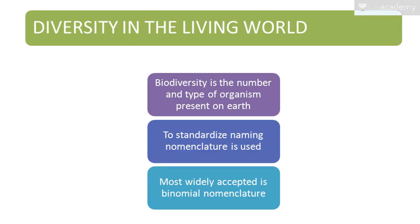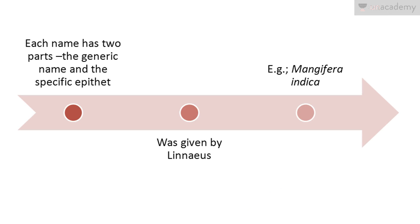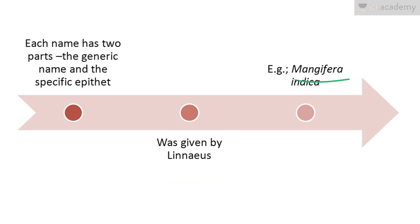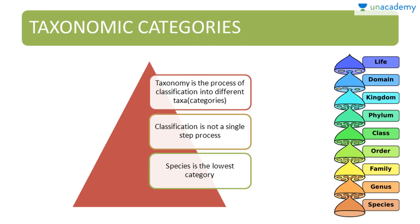Now we move on to diversity in the living world. Biodiversity is the number and types of organisms present on Earth. Various names are used in various places for organisms, so for standardizing naming, nomenclature is used. The most widely used is binomial nomenclature, introduced by Carolus Linnaeus. Each name has two parts: the generic name and the specific epithet. Example: Mangifera indica — Mangifera is the generic name and indica is the species name.